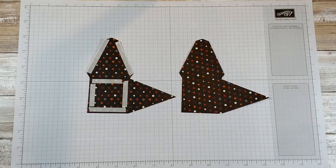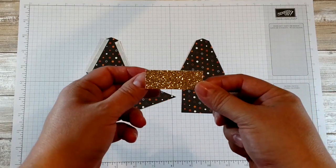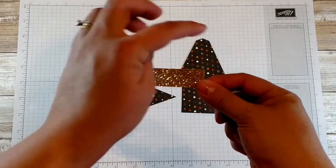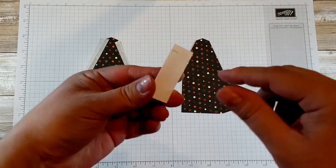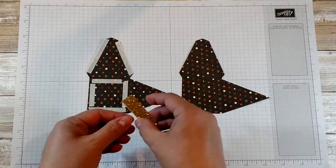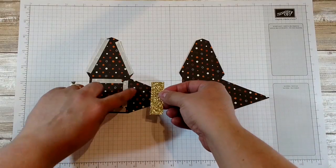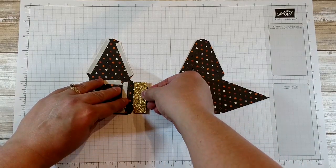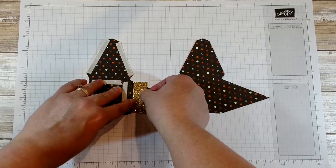Now we're going to take four pieces of gold glimmer paper. Each one is going to measure 2 inches by 3 1⁄4 and I've already put some strong adhesive on it. You want to make sure it's strong. I'm going to line up the bottom corners with the edges of this triangle and that will get it right where it needs to be.